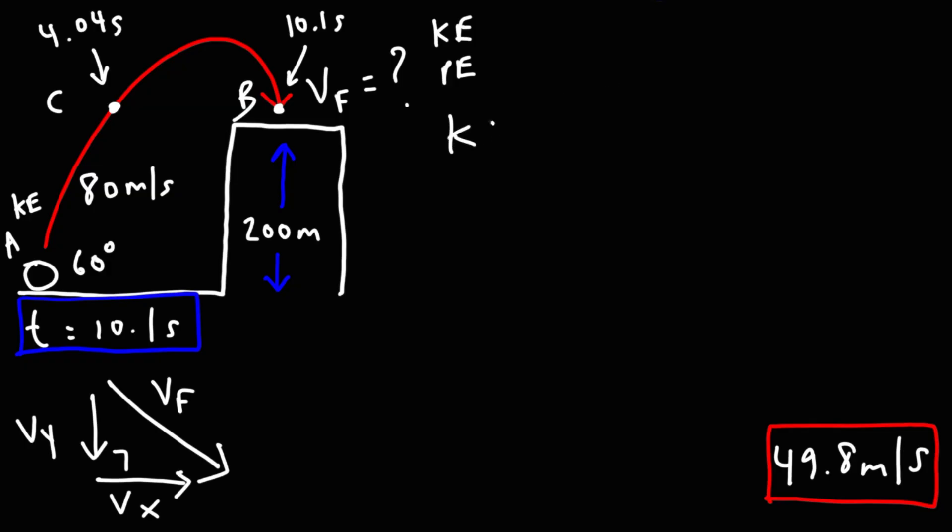So initially, at point A, all we had was kinetic energy to begin with. At point B, the ball still had kinetic energy—we'll call it final kinetic energy—and it also has potential energy. That is, gravitational potential energy. Initial kinetic energy, that's going to be 1 half mv initial squared. The final kinetic energy will be 1 half mv final squared, and the formula for gravitational potential energy is mgh. Now, we don't have the mass of the ball, but that's okay because if we divide everything by m, m will disappear.